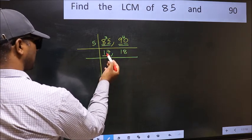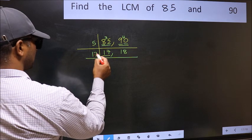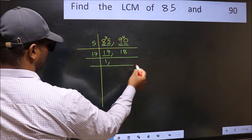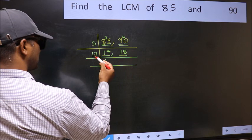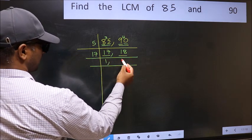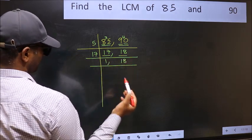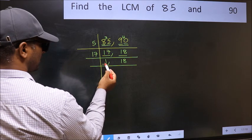Now here we have 17. 17 is a prime number. So 17, 1, 17. The other number 18, not divisible by 17, so you write it down as it is. Now we got 1 here.